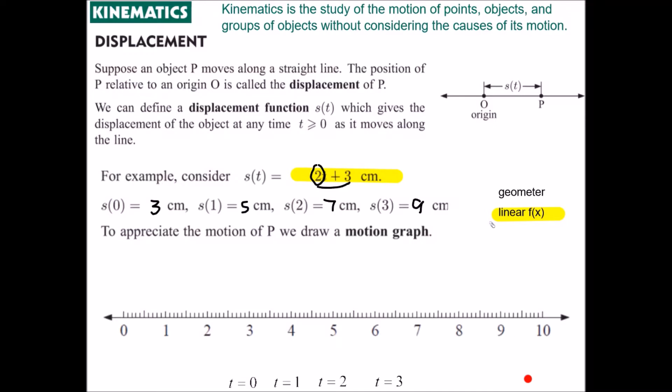And we can represent this motion on a motion graph. So we have our initial position is at 3. So that is when t equals 0. Then we have t equals 1 will occur at this point here. We have 5 cm from the origin, and then 7 cm t equals 2, and 9 cm would have been t equals 3.